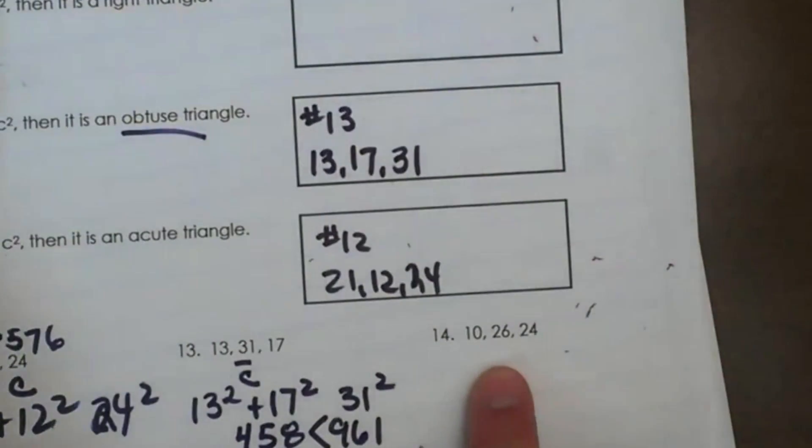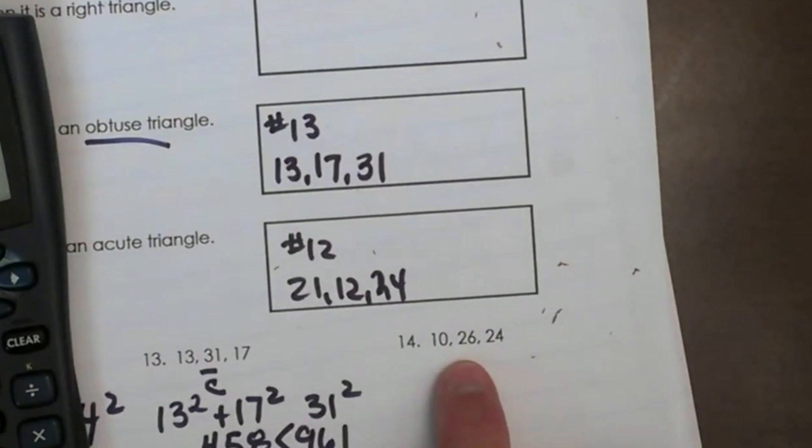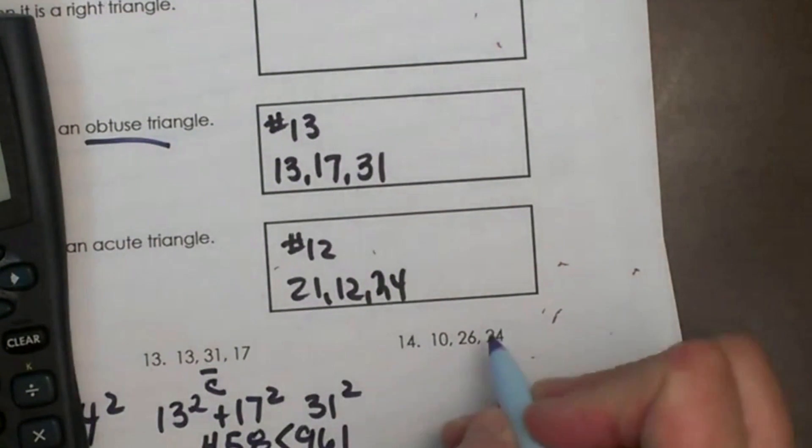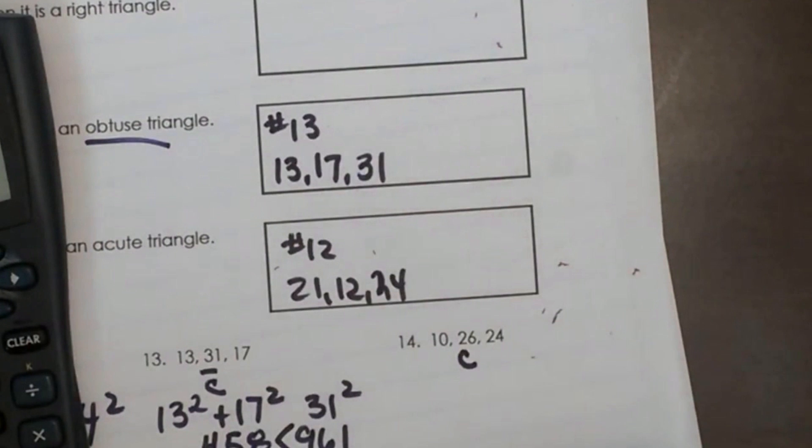So let's look at this one. We have 10, 26, and 24. The longest side is 26, so that means 26 is C and A and B are the other two.